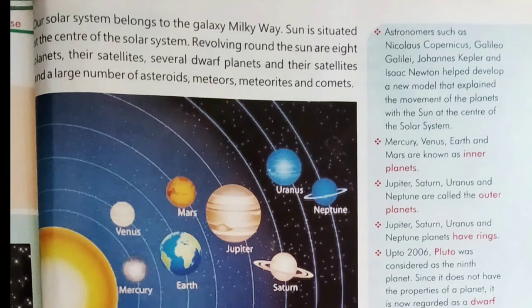Mercury, Venus, Earth and Mars are known as inner planets. Jupiter, Saturn, Uranus and Neptune are called the outer planets. Jupiter, Saturn, Uranus and Neptune planets have rings around them.